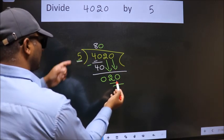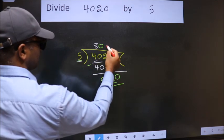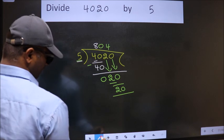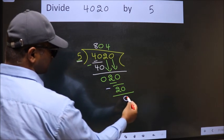When do we get 20? In 5 table, 5 fours 20. Now, we subtract. We get 0.